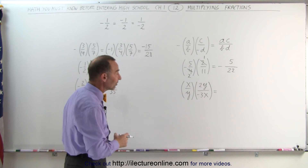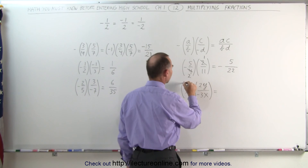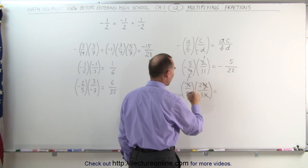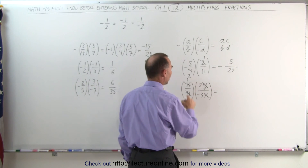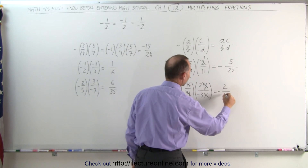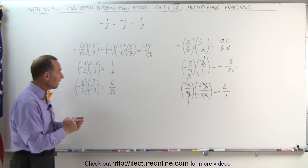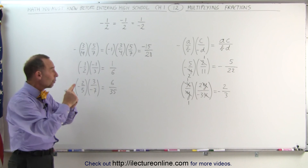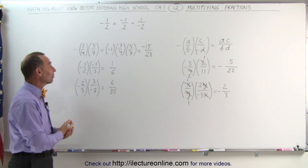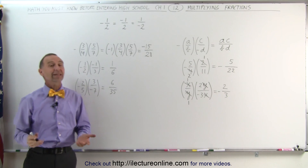Here again, we can simplify first. We have an x in the numerator and an x in the denominator — those cancel, becoming 1. We also have a y and a y — that becomes 1. 1 times 2 is 2, 1 times 3 is 3, and with one negative sign the result is negative 2 thirds. And that's how we multiply fractions. When we multiply fractions, we multiply the numerators, we multiply the denominators, and then we count the number of negative signs. An odd number of negative signs gives a negative answer; an even number gives a positive answer.